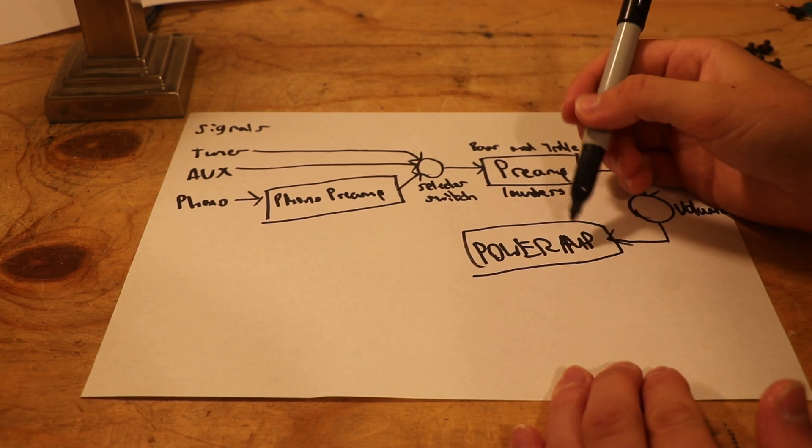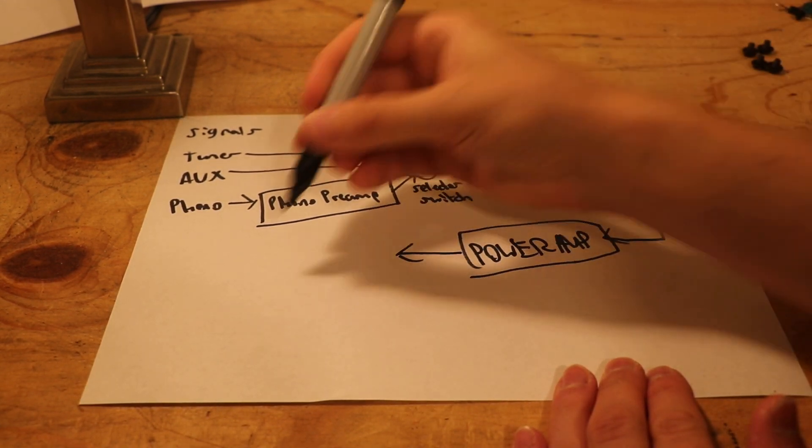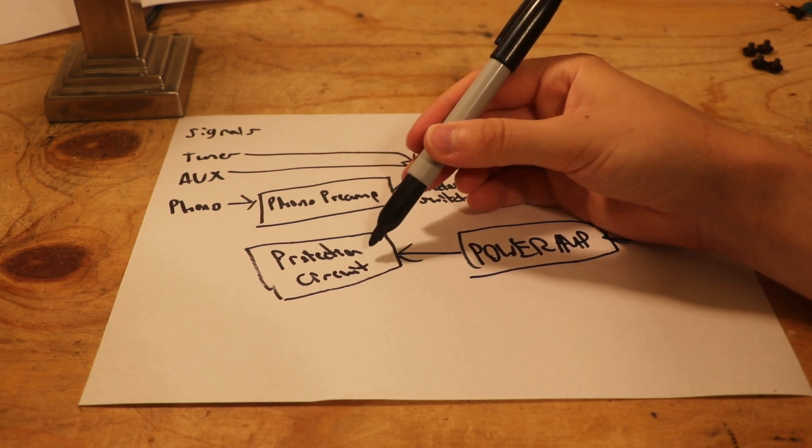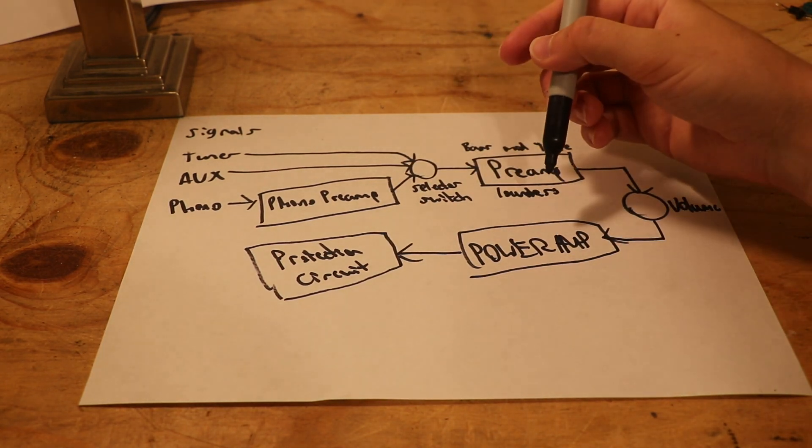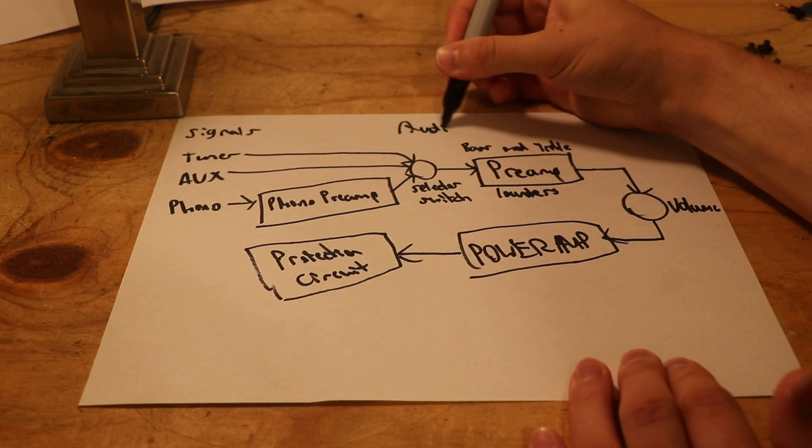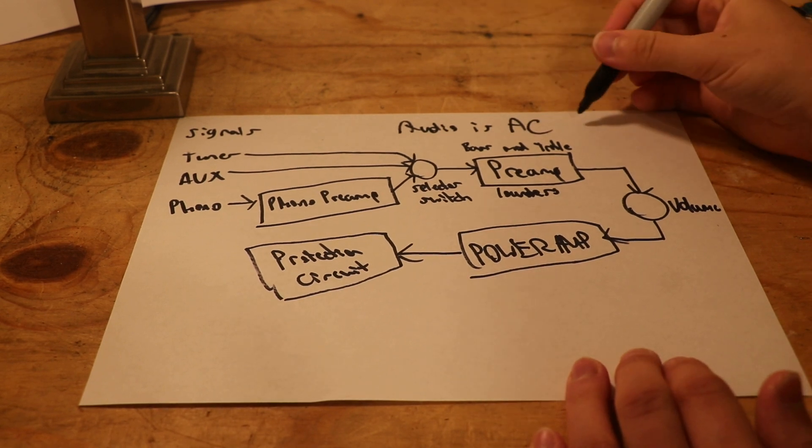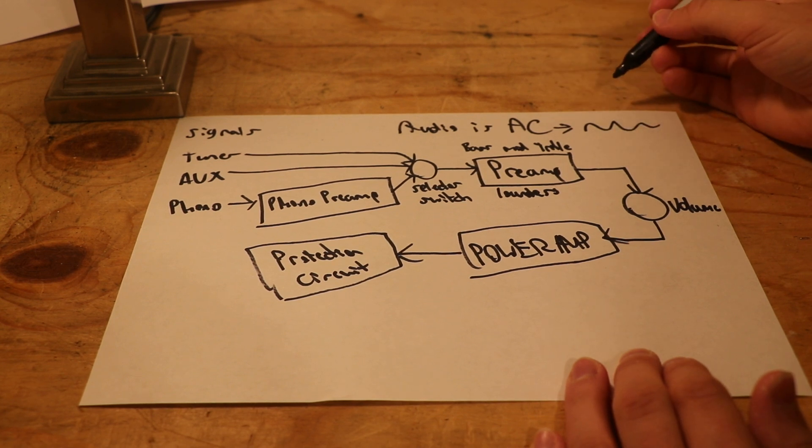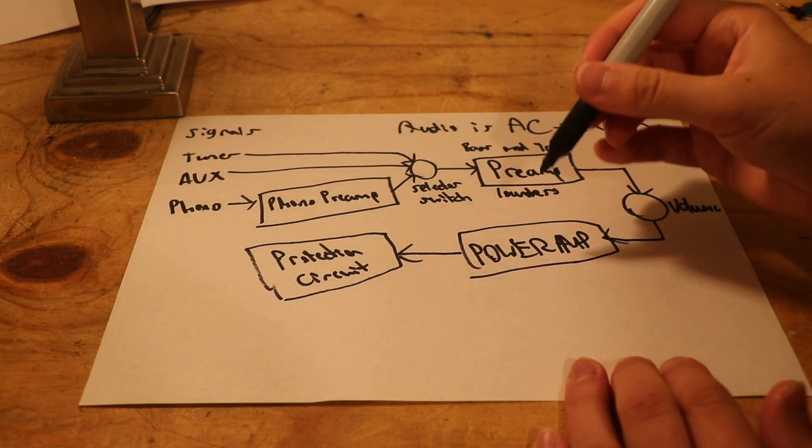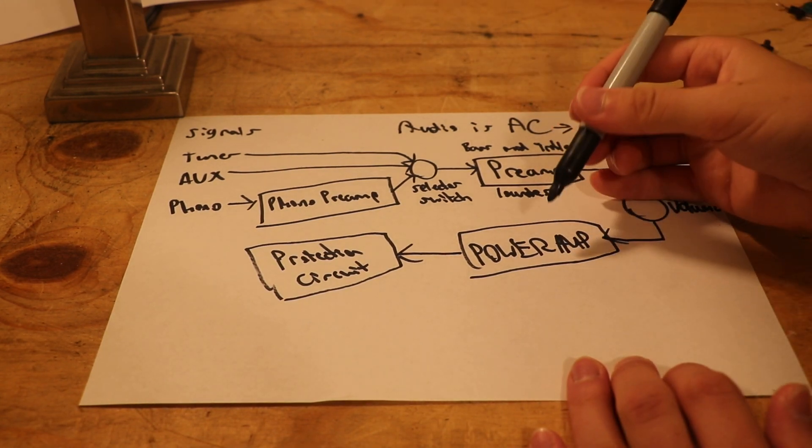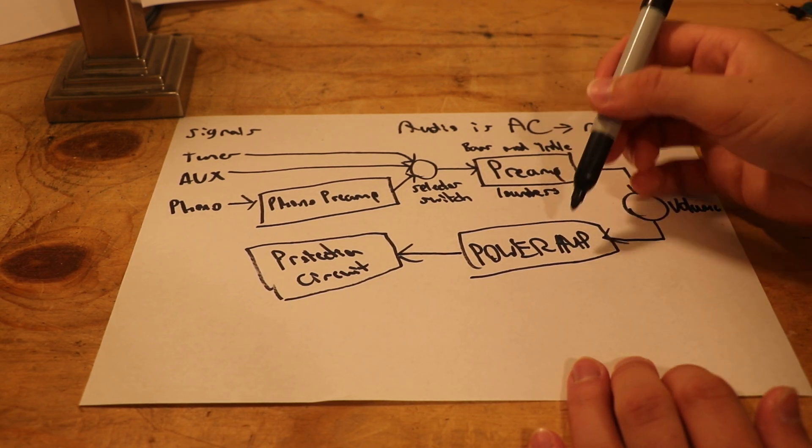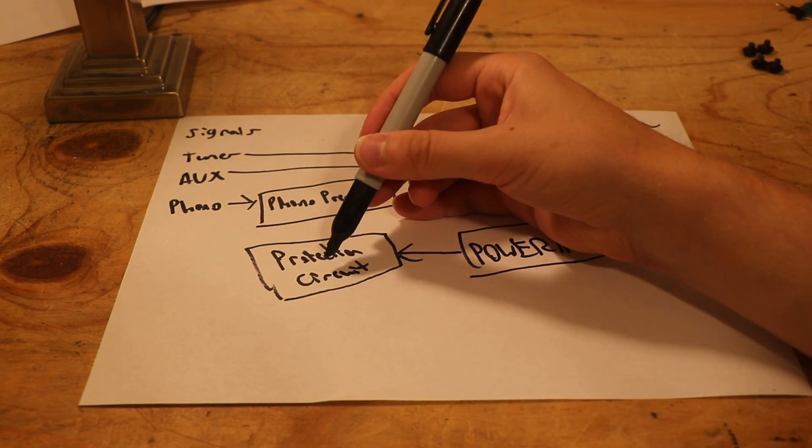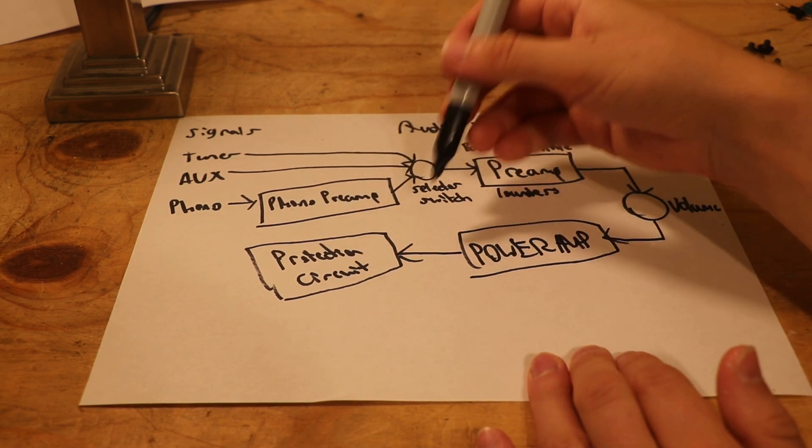Once it's through the power amp, a good receiver will have a protection circuit. What this protection circuit is doing is it is looking for nasty stuff coming out of here. Audio is AC, like this. Vibrations happen like this. Vibrations do not happen with DC, which would be a flat line, and that's what we're trying to make sure doesn't come out of the power amp. DC will ruin your speakers. It'll basically turn them into a heater, fry the coil, and your speaker won't work anymore. A good receiver has a protection circuit, and it's protecting your speakers from bad DC current coming out of the power amp in case of a failure.